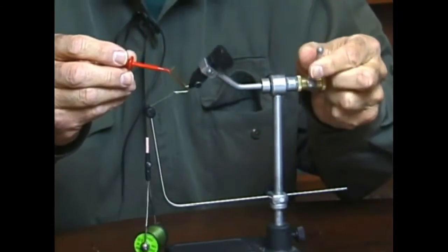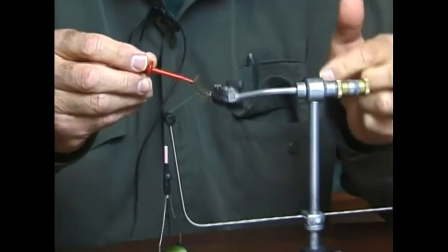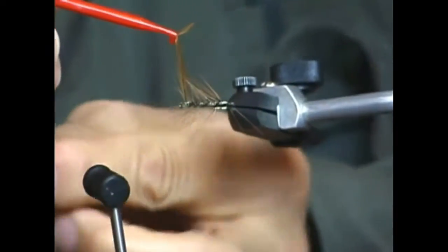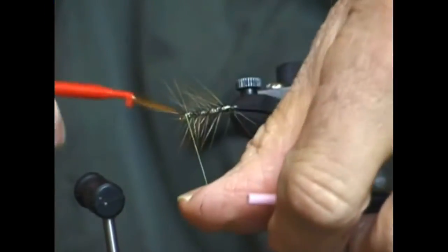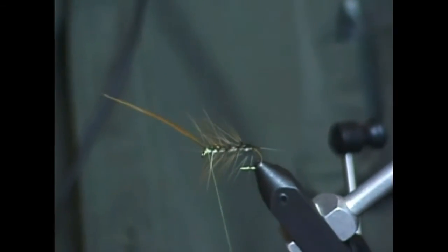I'm going to wrap it forward, one, two, three, four, five wraps, remove the thread from the bobbin cradle, wrap it over the saddle hackle with three, four wraps to secure it.